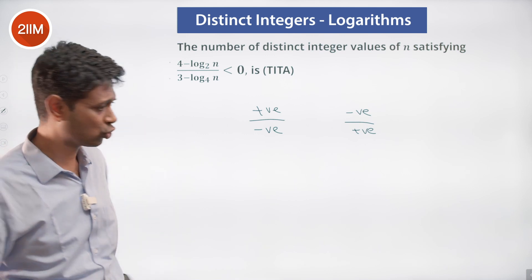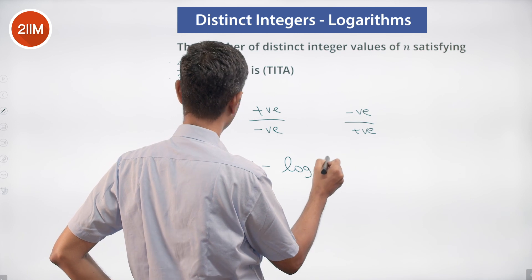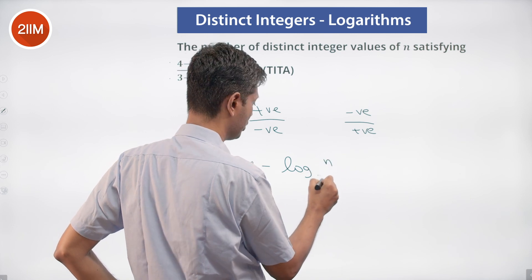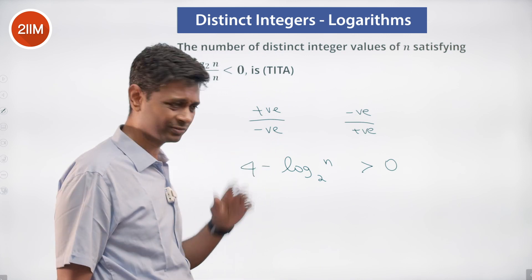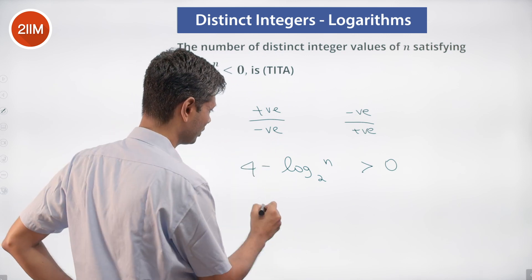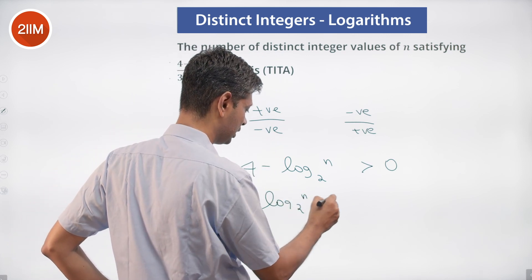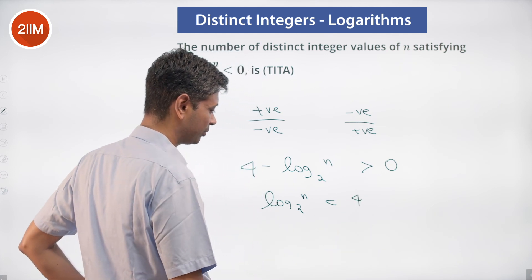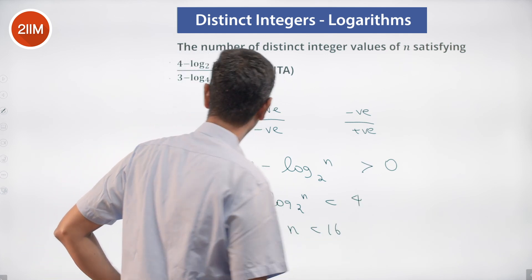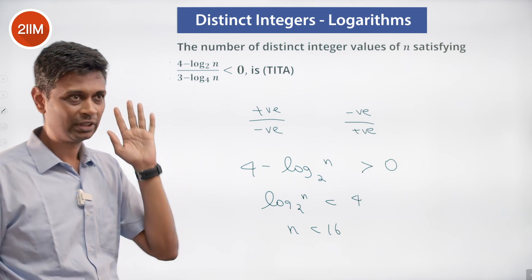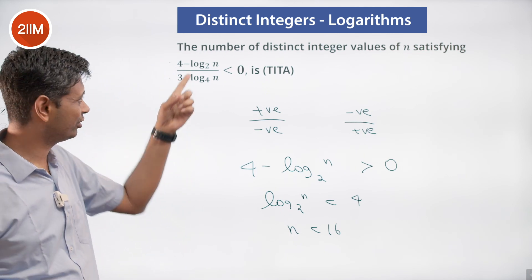I'm going to solve for 4 minus log n to the base 2 greater than 0, which gives log n to the base 2 less than 4, so 2 to the power 4 is 16, meaning n is less than 16. So when n is less than 16, this is positive; at n equal to 16, this is 0; and greater than 16, this is negative.